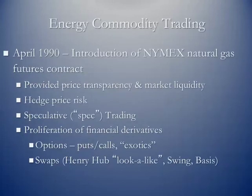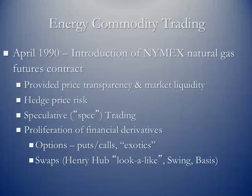In terms of energy commodity trading, a natural gas contract was launched in April 1990, and the crude oil contract was launched in 1983. These provided price transparency and market liquidity — you were now able to hedge your price risk — but they also added instruments for speculative trading. This led to the proliferation of various financial derivatives: options such as puts and calls, more exotic options, and swaps — both Henry Hub look-alike swing swaps and basis swaps.